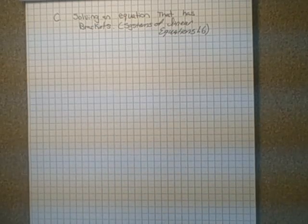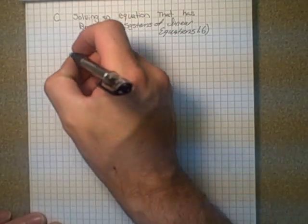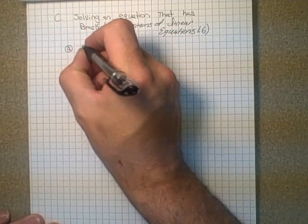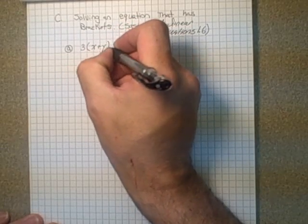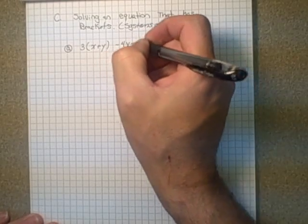And that's our third example for this section. So my example that I'm going to follow through with, I have 3 times x plus y in brackets, minus 4y equals 1.